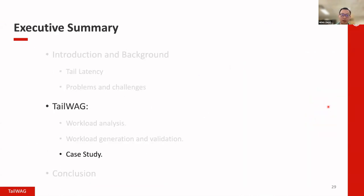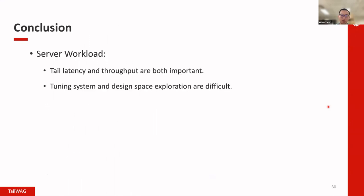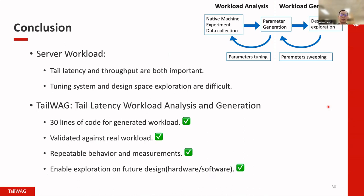Finishing up, I want to conclude our work. Hopefully during this talk I've covered the challenges, the metrics for server workloads — both latency and throughput are important, and balancing them is difficult. Using TailWag, we can have easy, fast, and repeatable workload analysis and generation using less than 30 lines of code. We validated against real workloads and can reproduce that behavior. The analyzer does not rely on the specific hardware system. Thank you.